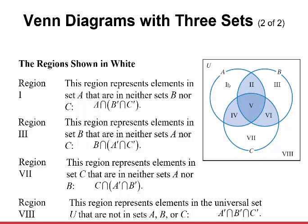The regions shown in white: Region 1 contains elements in set A that are not in B or C. Region 3 contains elements in set B that are not in A or C. Region 7 contains elements in C that are not in A or B. Region 8, outside all circles, represents elements in the universal set that are not in A, B, or C at all.